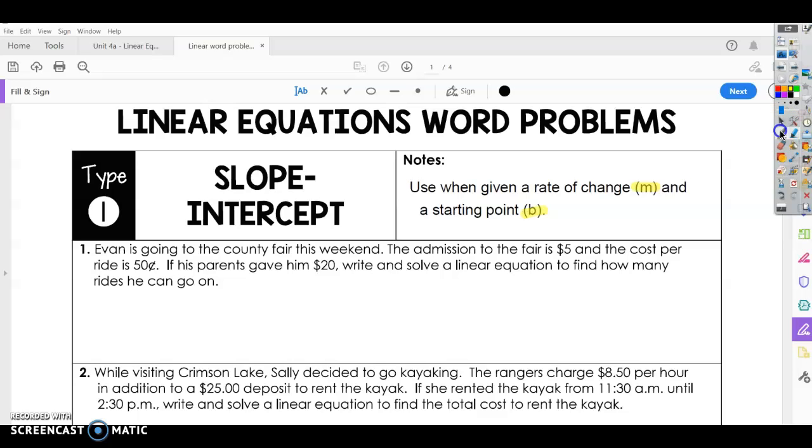Let's look at the first question. Evan is going to the county fair this weekend. The admission to the fair is $5, and the cost per ride is 50 cents. If his parents gave him $20, write and solve a linear equation to find how many rides he can go on. So the first thing we want to do is find out what is our slope and what is our starting point.